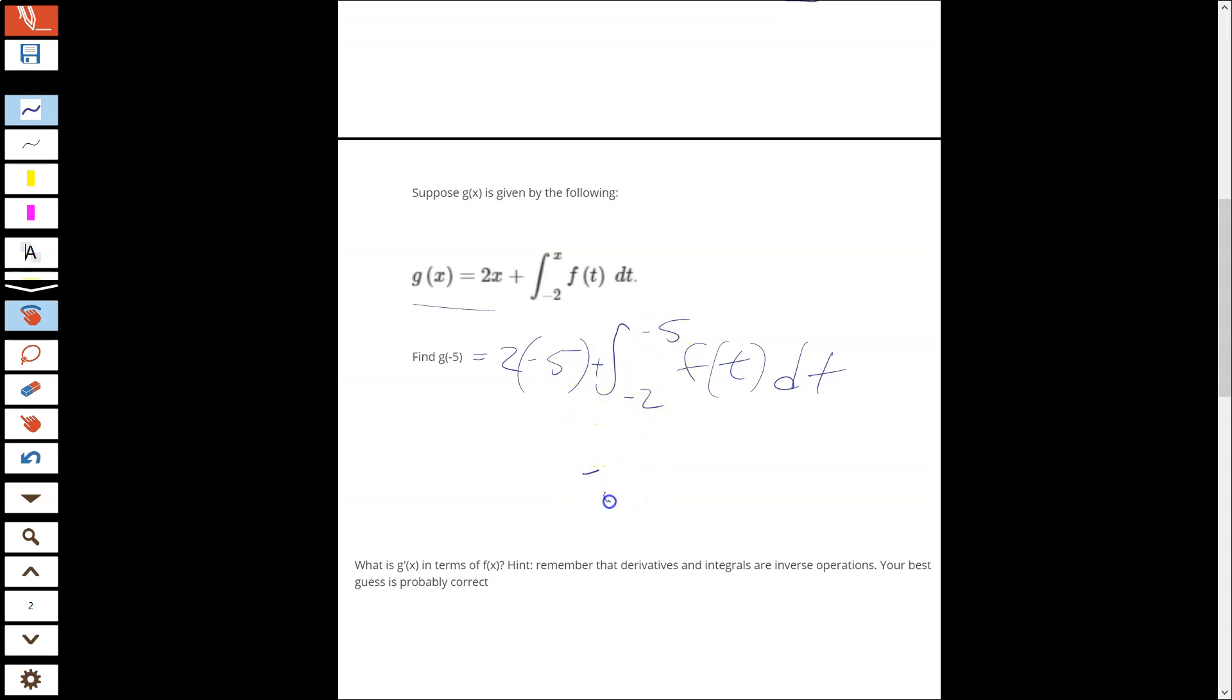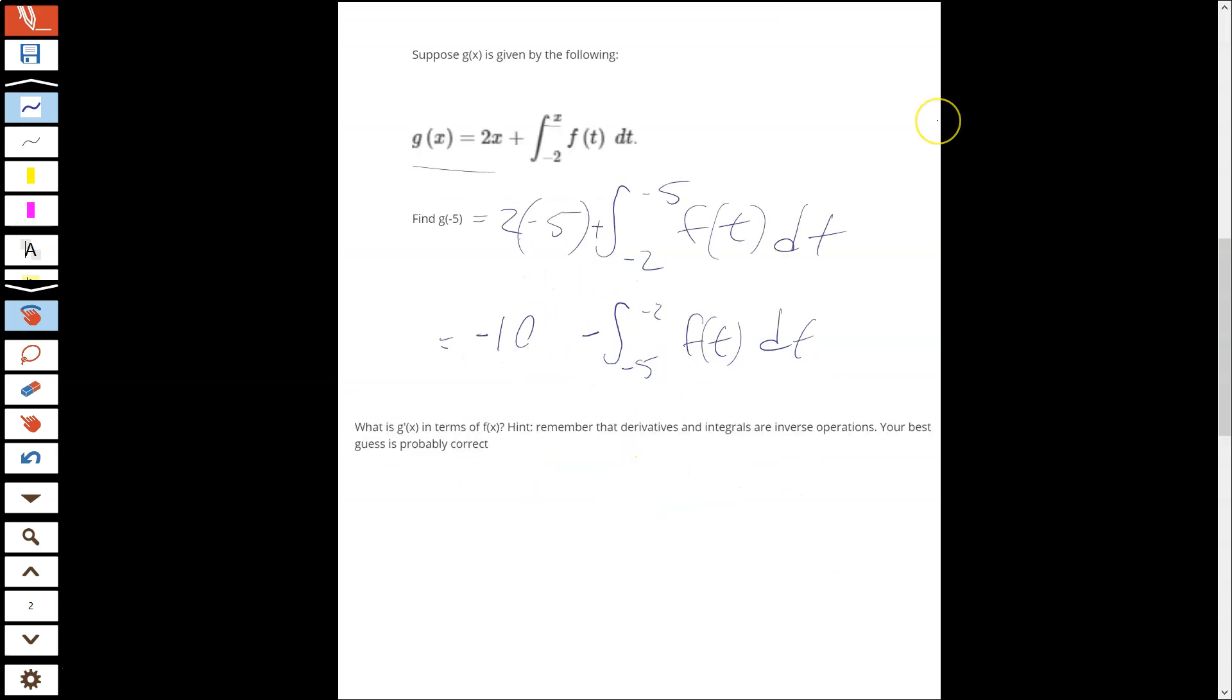And this should be plus here. So notice again, I have my bounds reversed. So we're going to rewrite. So negative 5 to negative 2 is how I want to write my integral, and then I might change my plus to a minus. And then there's 2 times negative 5 becomes negative 10. So remember, this is called an accumulation function. The way I solve it is just by plugging in my x and evaluating the integral. So now I need to go back up to my graph and figure out what this piece is here.